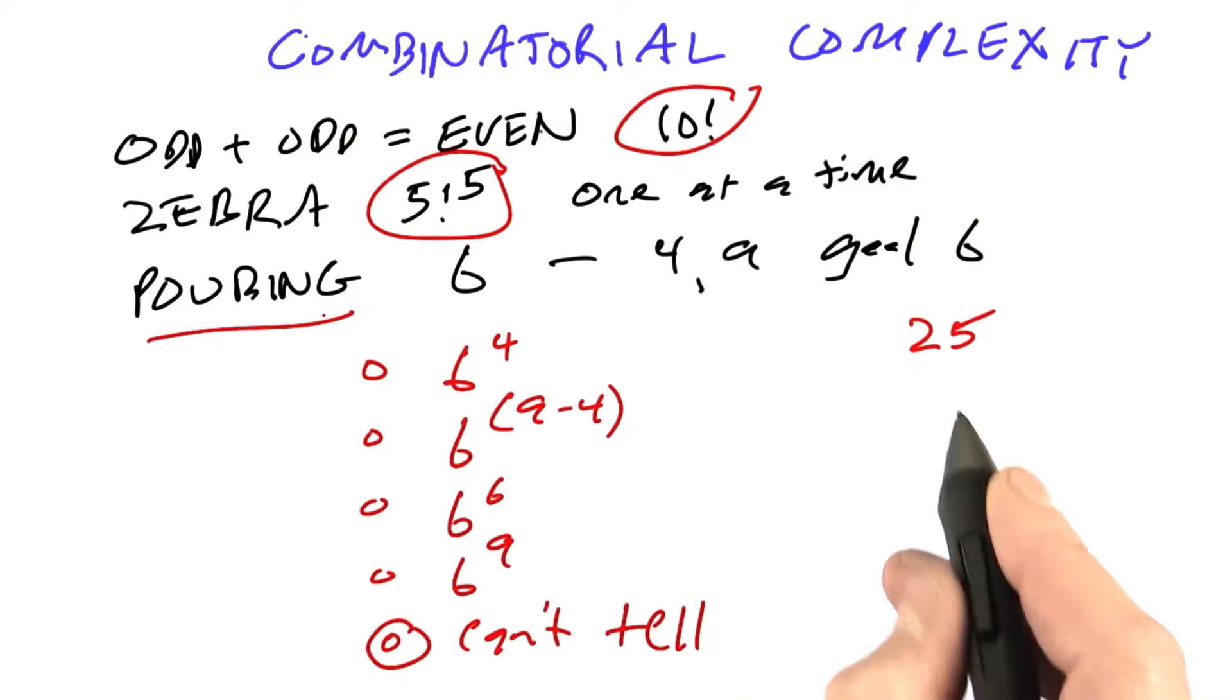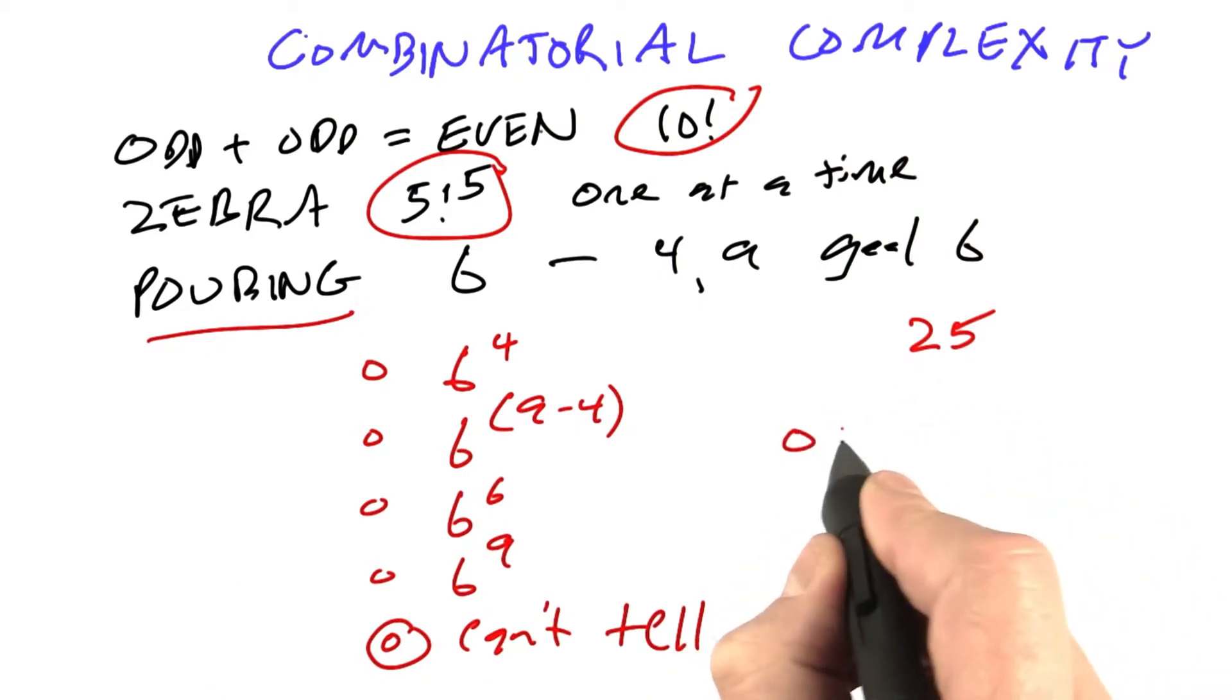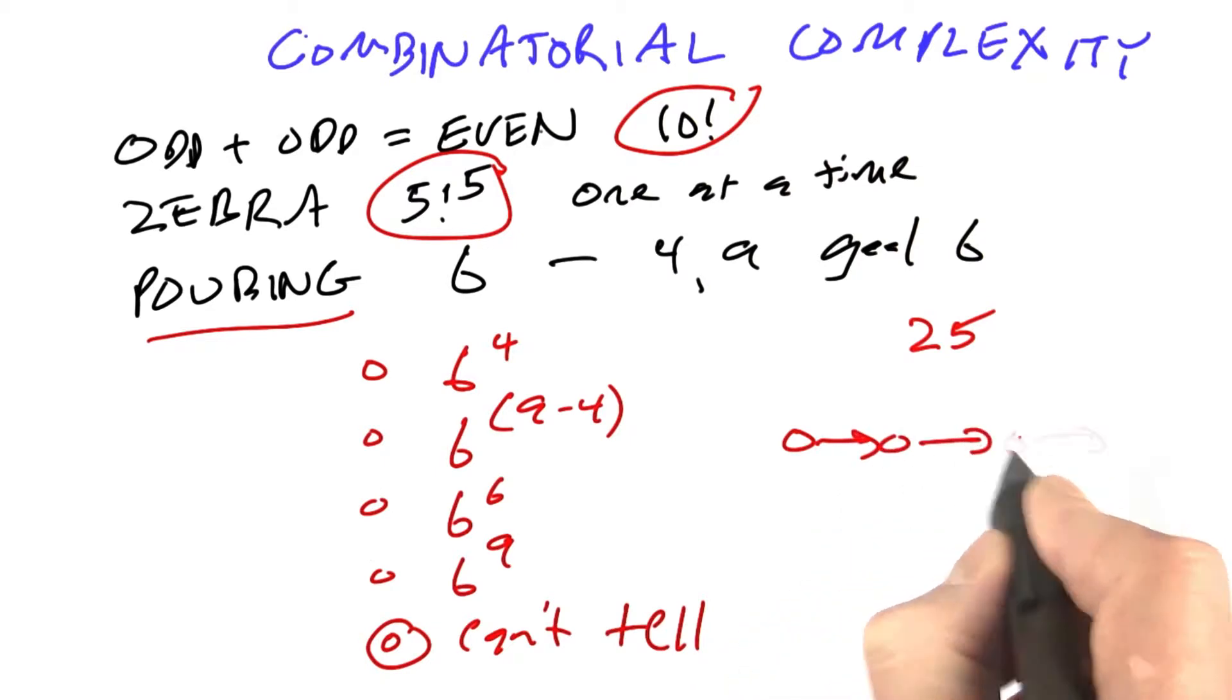For the pouring problem, we're trying to not fill static variables, but rather put together a sequence of actions to go from one state to the next. We don't know how long that sequence is.